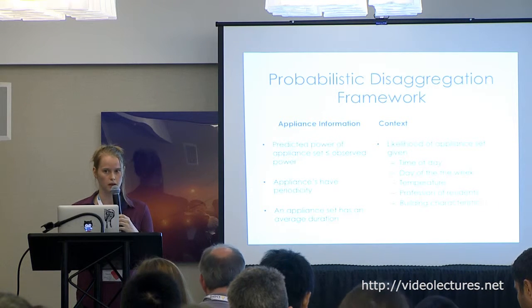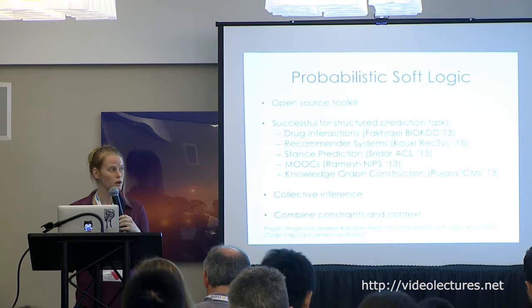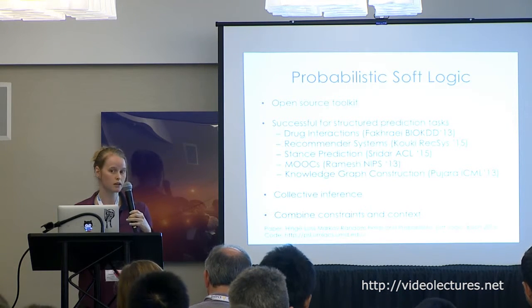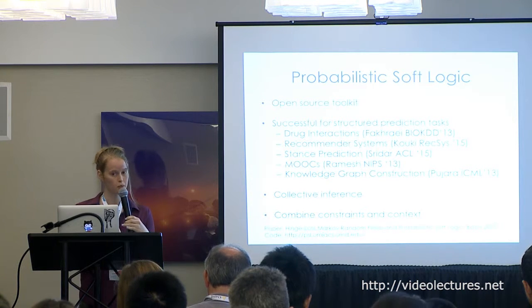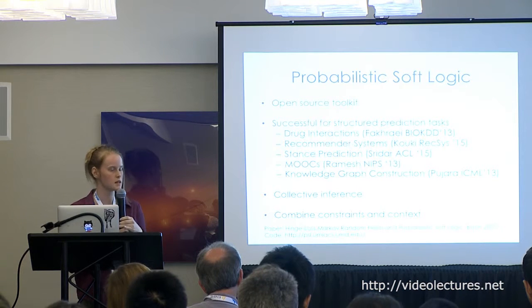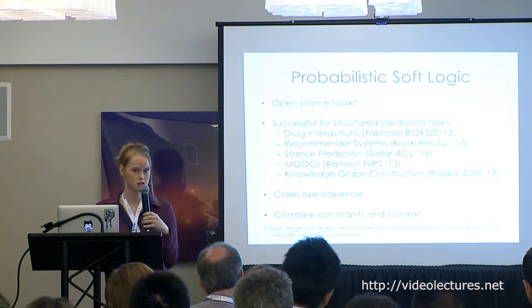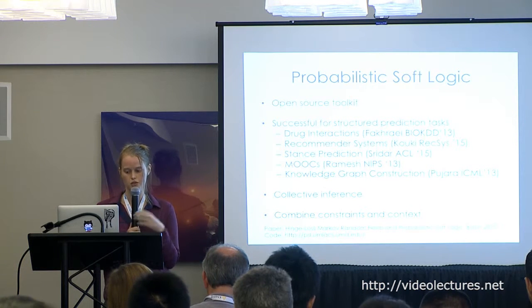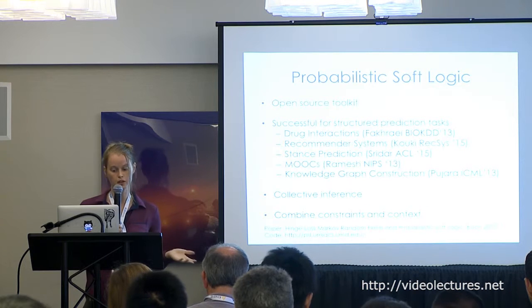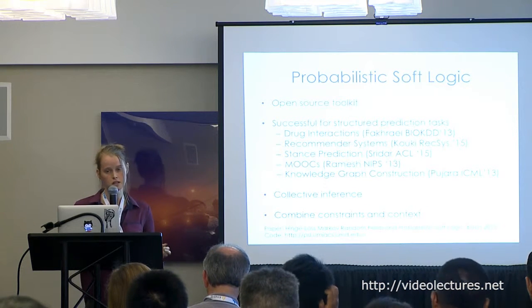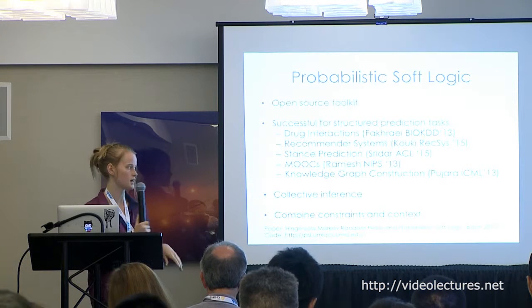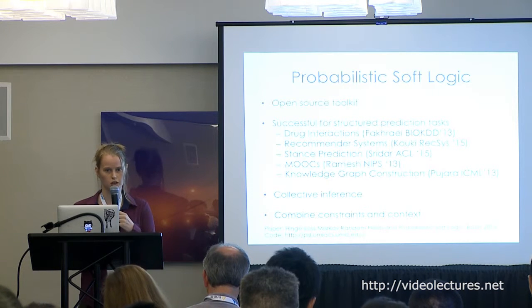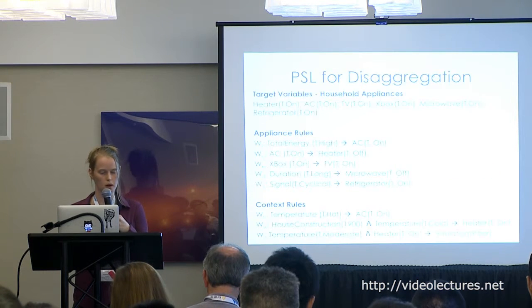Our framework can handle a lot more information as well. To encode our probabilistic disaggregation framework, we use probabilistic soft logic, or PSL, which is an open-source toolkit. It's ideal for structured prediction tasks like ours and has been successful in applications from drug-to-drug interactions to knowledge graph construction. It's ideal for collective inference and allows us to combine constraints and context.